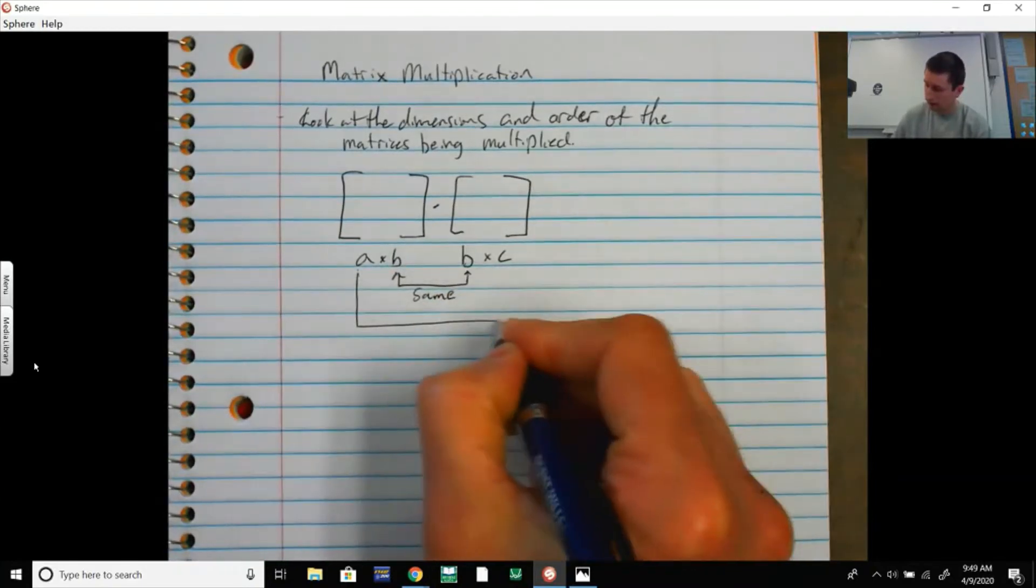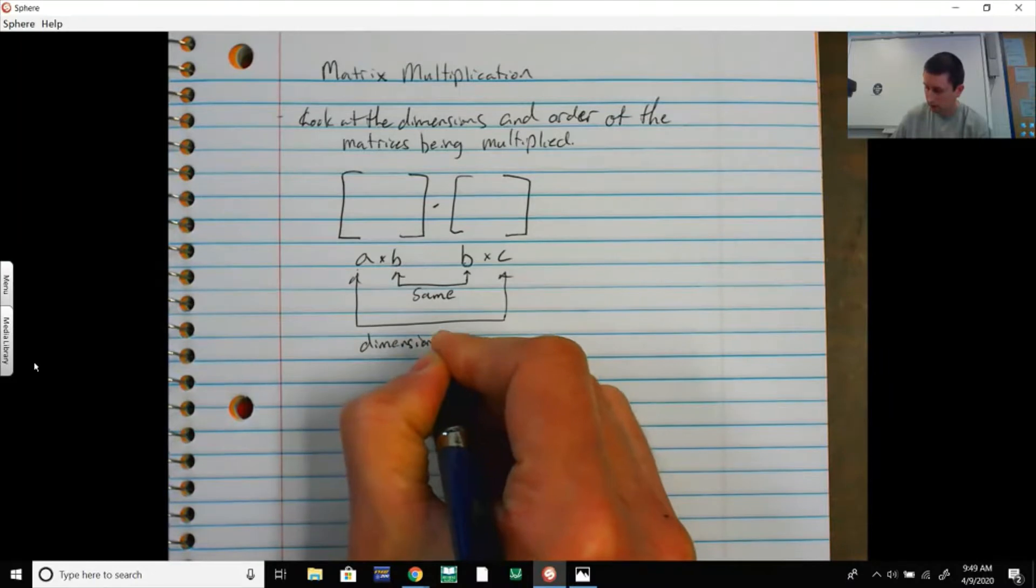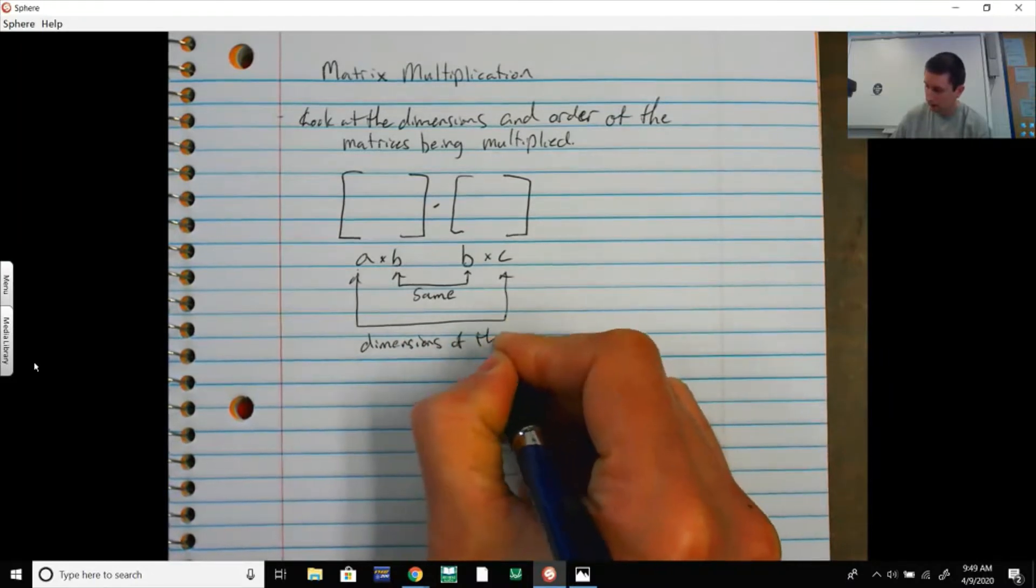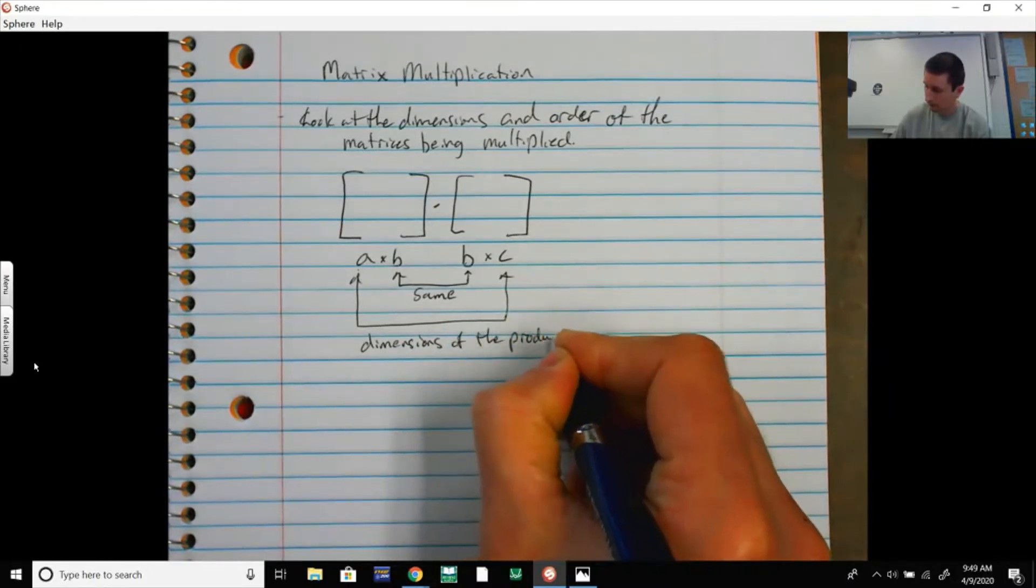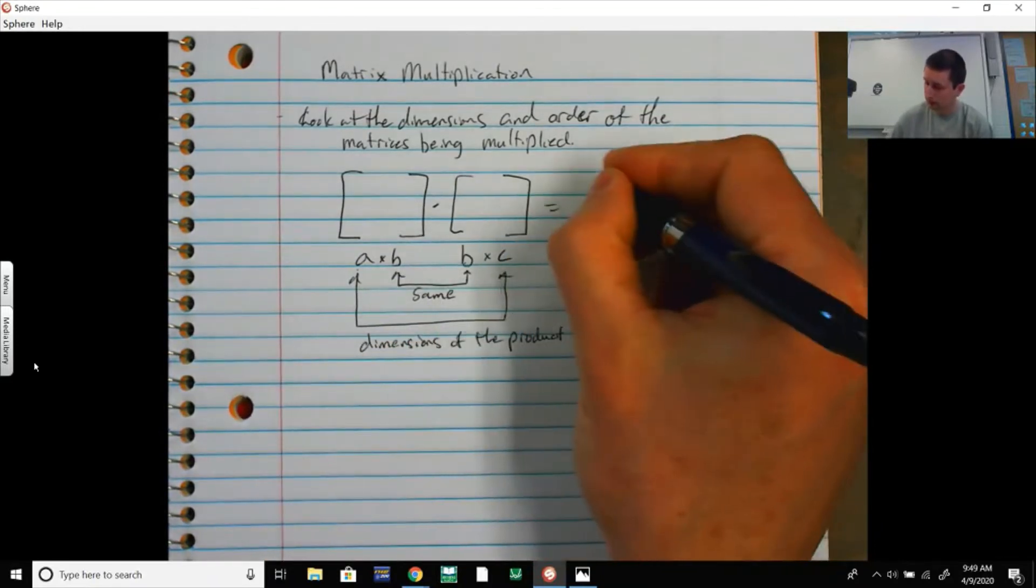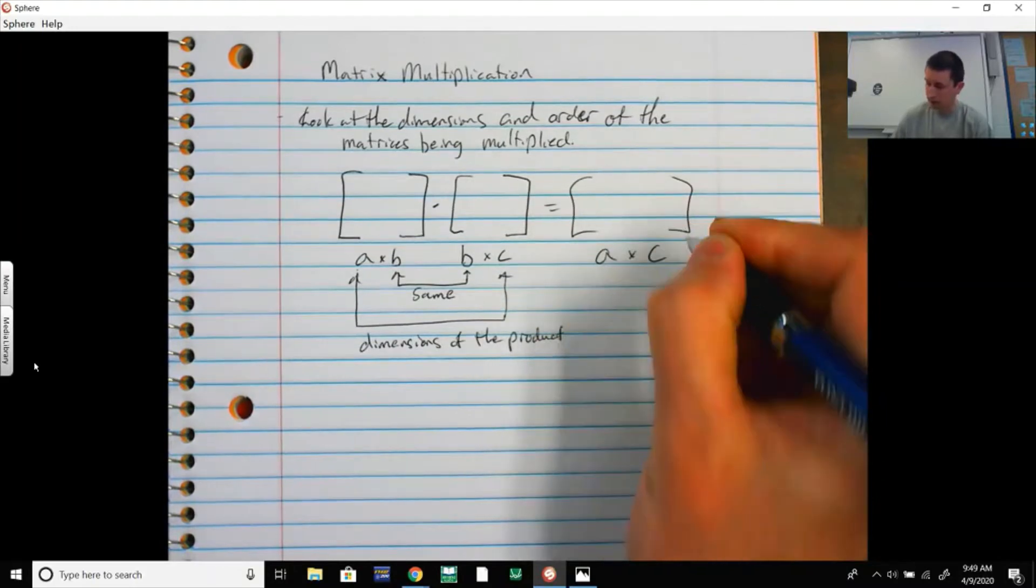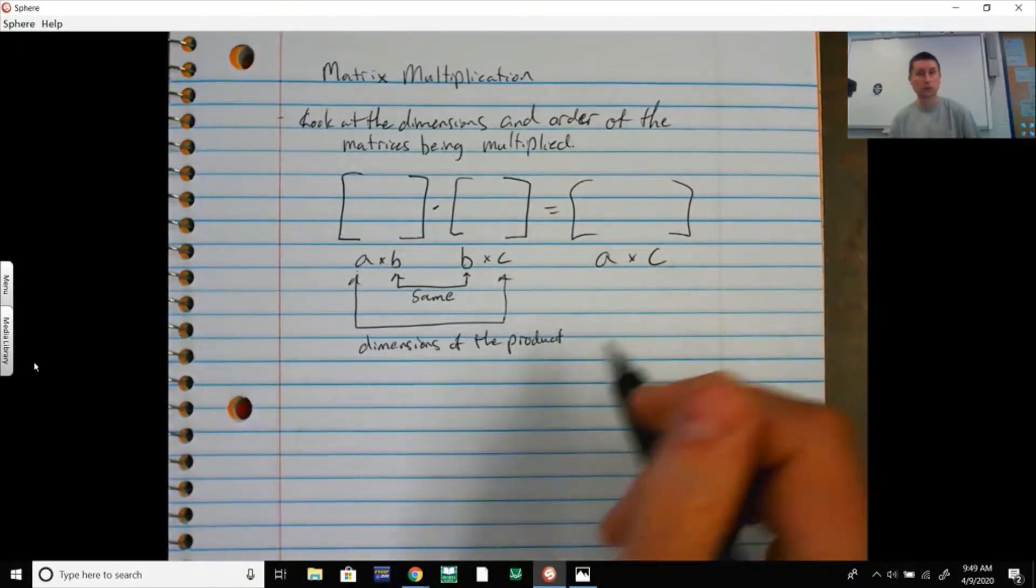These outside ones, these are going to be the dimensions or the order of your answer. So if you take an a by b matrix, multiply with a b by c matrix, your final answer is going to be an a by c matrix: a rows and c columns. I'm going to work one out by hand and then show you how to do some of this on the calculator.